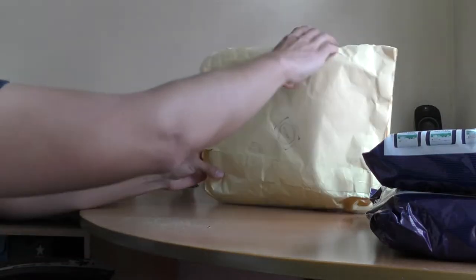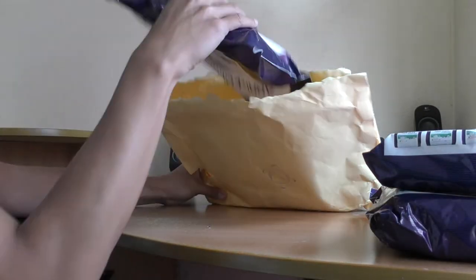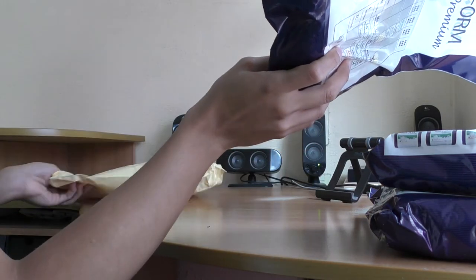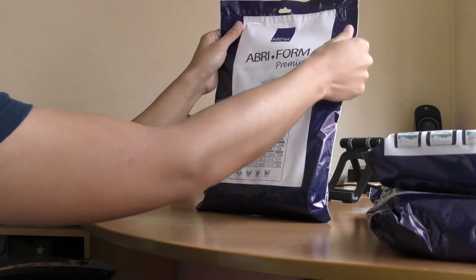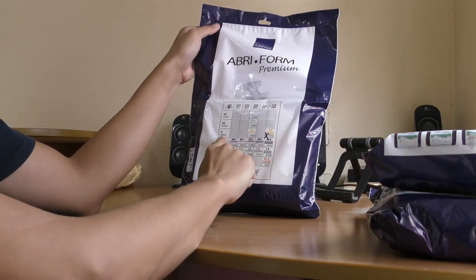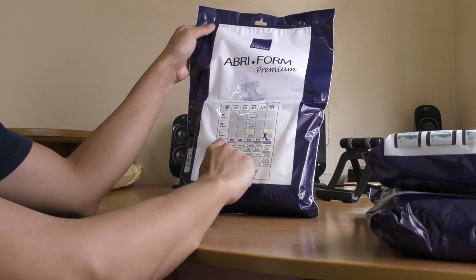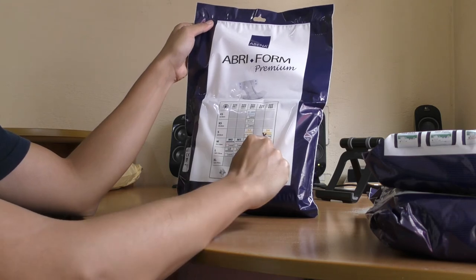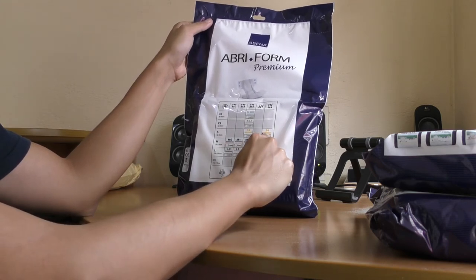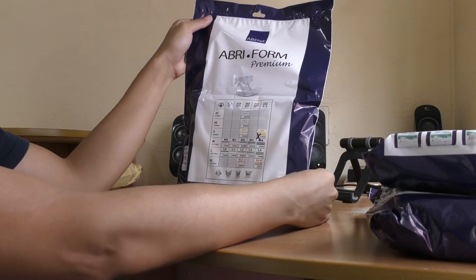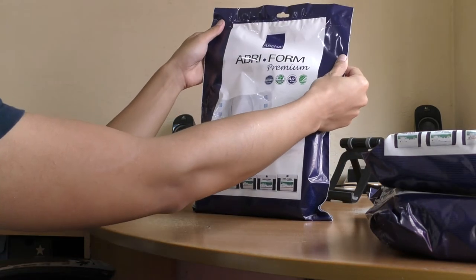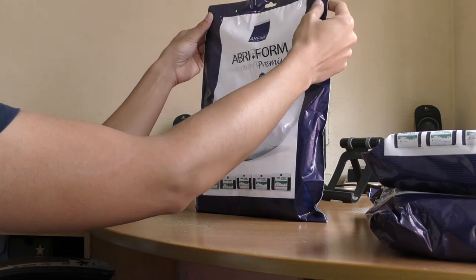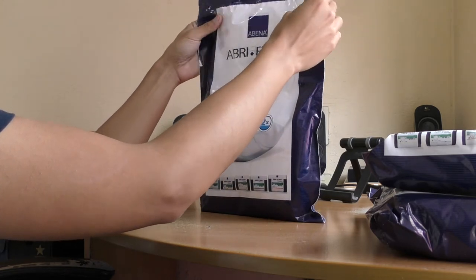The last one, it's Abena Form Premium, small, 60 to 85 cm, the maximum absorbency level. Let's check it out.